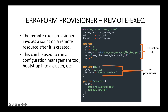First we are using a file provisioner to copy a file from the source to the destination, and then we are using remote exec to execute that script. So we will first upload the script to the remote resource, then give it execute permission, and then execute that script on the remote resource using remote exec.